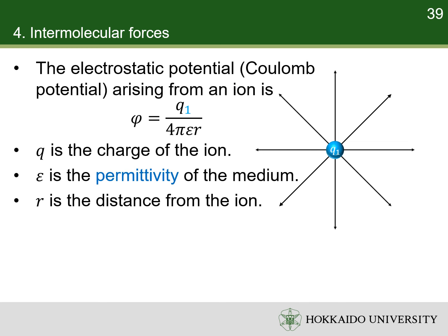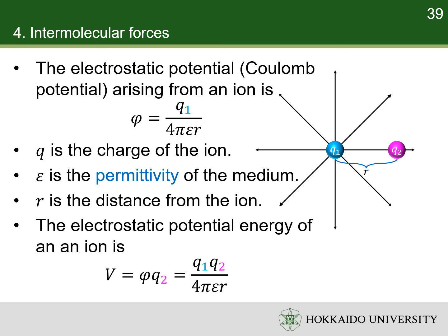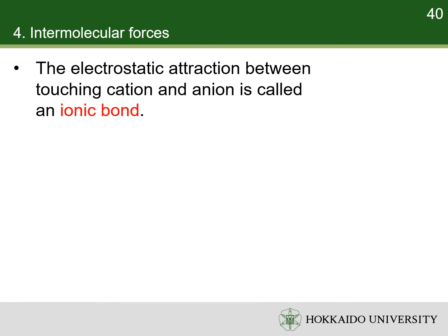The electrostatic potential arising from one ion is given by Coulomb's law. The electrostatic potential energy of an ion is equal to the product of the electrostatic potential and its electric charge. So, the electrostatic potential energy between two ions is proportional to the product of their charges and inversely proportional to the distance between them. The force between ions decreases with the distance between them. When a cation and an anion touch each other, the electrostatic attraction between them is called an ionic bond.